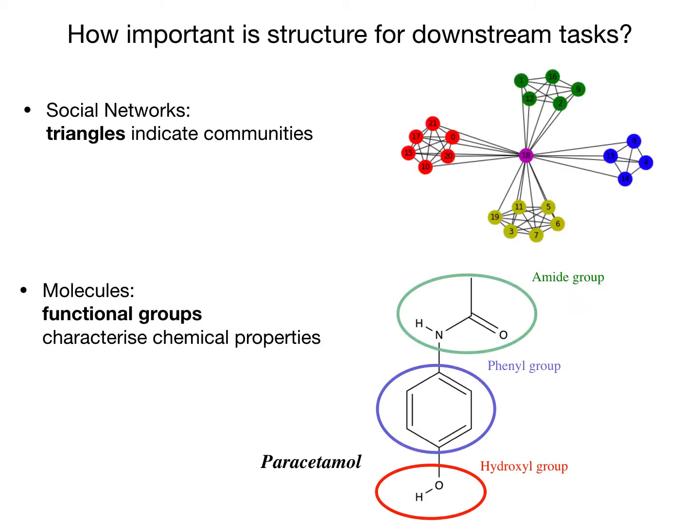How important is structure for downstream tasks? Domain evidence shows that in most application domains, structure is strongly correlated with the task at hand. For example, in social networks, triangles and cliques indicate communities, whereas in molecules there are certain substructures called functional groups that are known to characterize certain chemical properties.